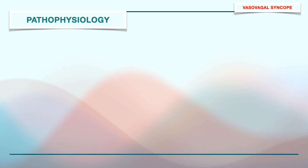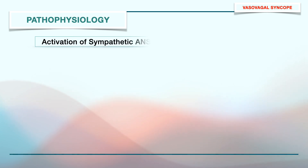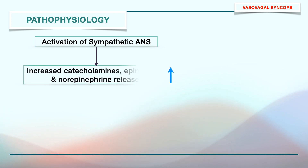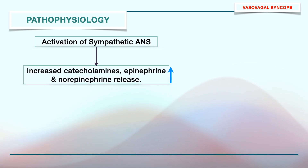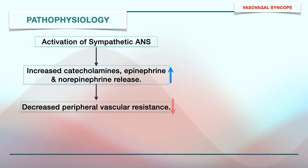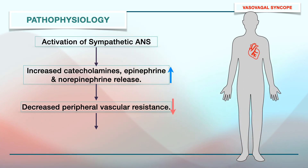In response to these factors, there is activation of the sympathetic division of the autonomic nervous system and release of increased amounts of catecholamines — epinephrine and norepinephrine — into the blood. This leads to a decrease in peripheral vascular resistance and there is diversion of a large amount of blood into the skeletal muscles.